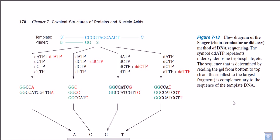Let us talk about nucleic acid sequencing, specifically the Sanger method of nucleic acid sequencing, which is a very important method based on a very basic technique. If you are a researcher and you get a DNA sequence, you need to know what the sequence is, because if we know the sequence of a DNA it will be a lot easier for us to work with it.